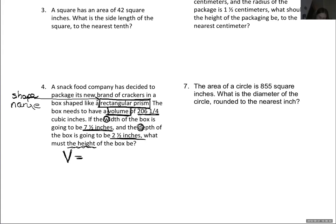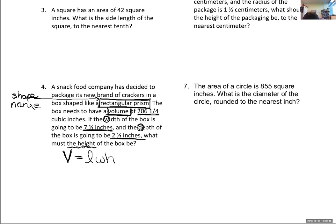V equals LWH — those letters are all shoved together, meaning they're multiplying: length times width times height. We don't want to find the volume — we want to use the volume to find a missing dimension. I'll plug in 206.25 for V — I'm too lazy to deal with fractions, and I know one quarter equals 0.25, like $206.25.